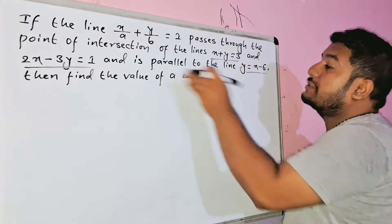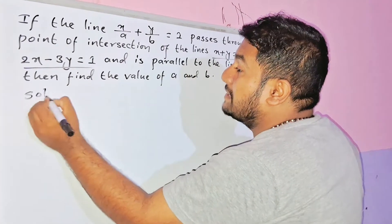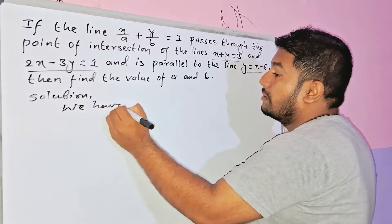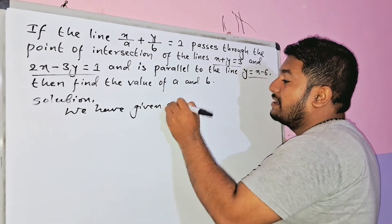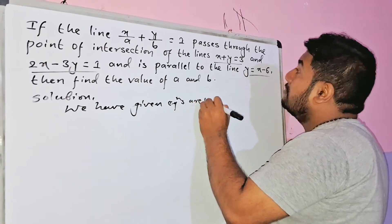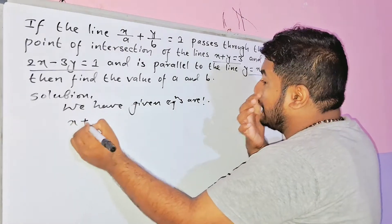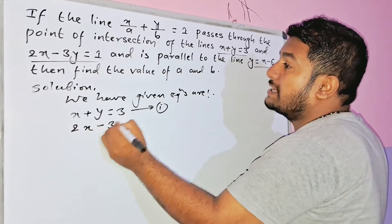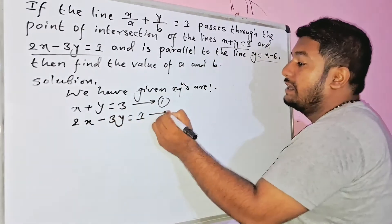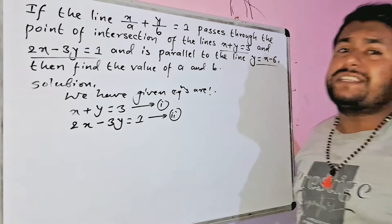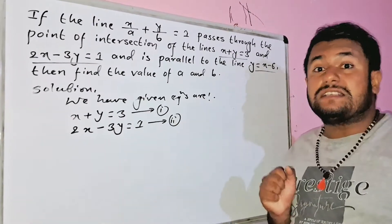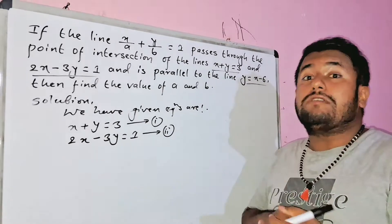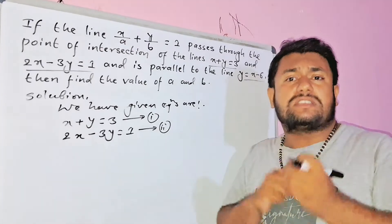We have been given two equations. First equation: x + y = 3 (equation 1). Second equation: 2x - 3y = 1 (equation 2). We will solve these two equations using the elimination method or substitution method.